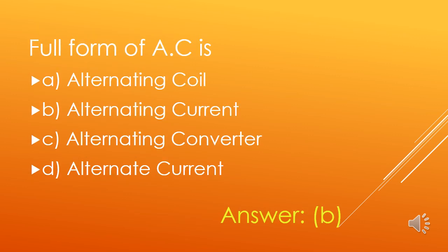Full form of AC is: A. Alternating Coil, B. Alternating Current, C. Alternating Converter, D. Alternate Current. So, option B is the right answer — AC stands for Alternating Current.